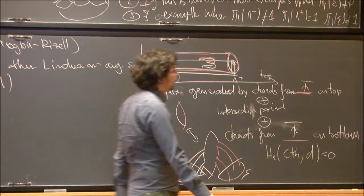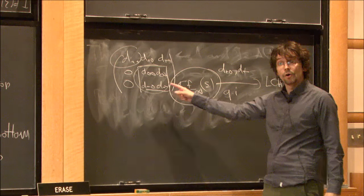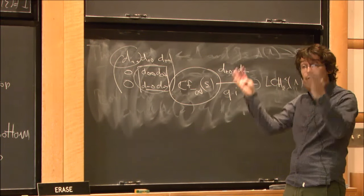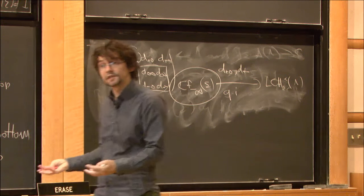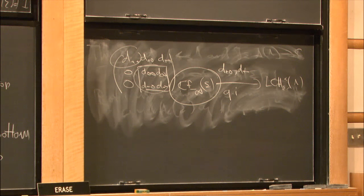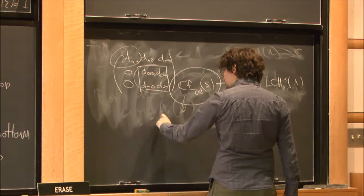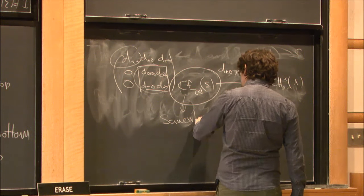You should think of the complex generated by intersection points and the negative red part as being the Floer complex of a virtual filling which doesn't exist, but which I simulate using an augmentation. This means that somewhere in here, the fundamental class — or rather the class of the point — exists.